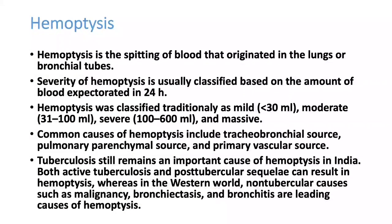Hemoptysis is the spitting of blood that originates from the lungs or bronchial tubes. Hematemesis is different — that is vomiting of blood. Both are entirely different, though these words are often confused. Hemoptysis specifically refers to blood production from the lung that is spit out.